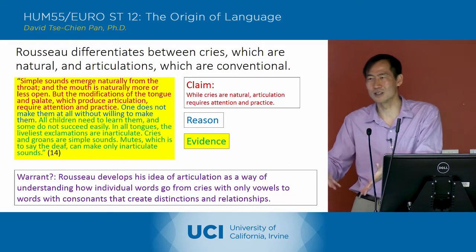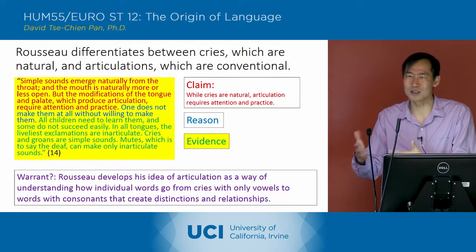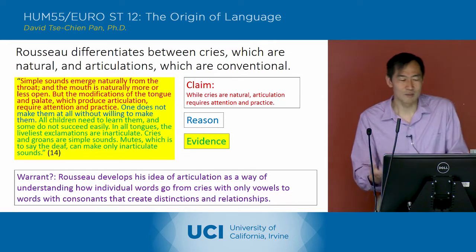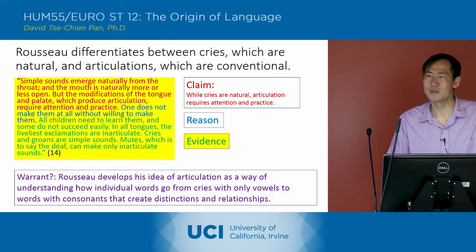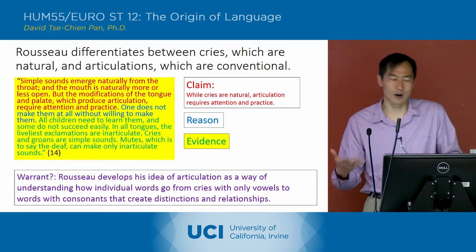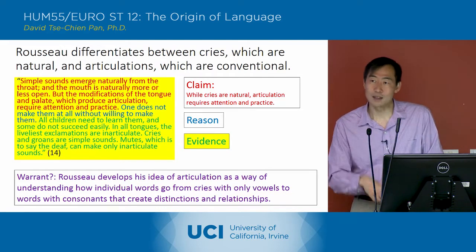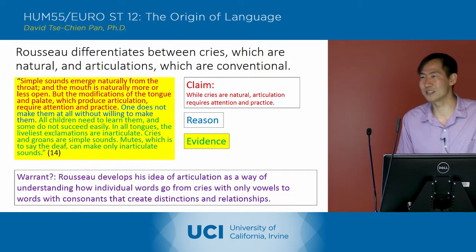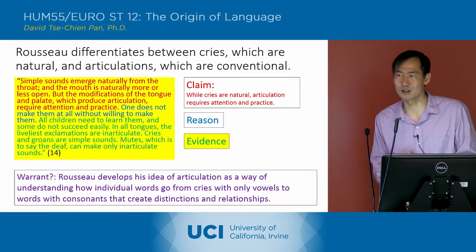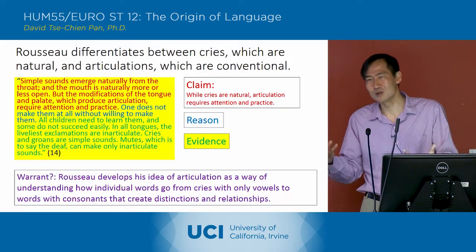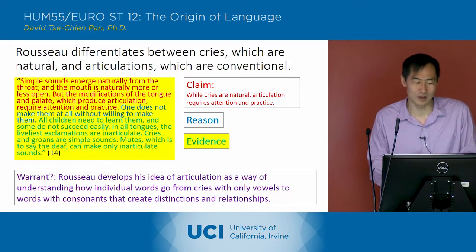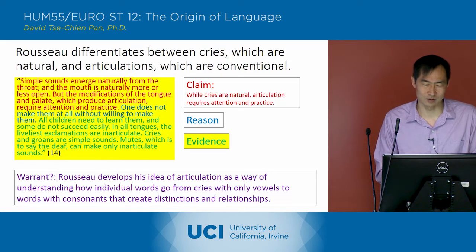Like when you're a toddler learning language, you kind of screw things up. You get the consonants mixed up, you get the vowels sort of mixed up. It takes work. And so he's saying, because of that — we see that in children — that's our evidence for saying articulation requires attention in practice, and it's something that's not natural but has to be learned. He also refers to examples where the liveliest exclamations are inarticulate: when you're crying out in pain, you don't have careful articulation with lots of syllables. You just have a scream, and that's what he calls the natural kind of language.